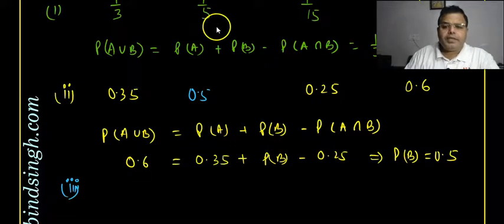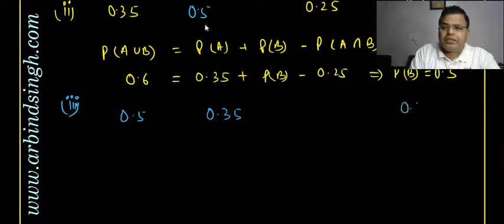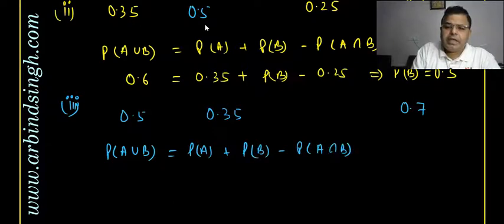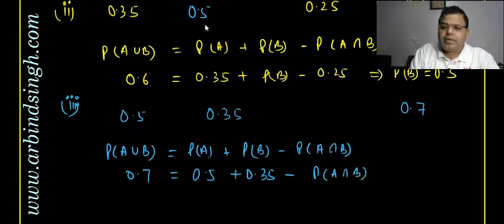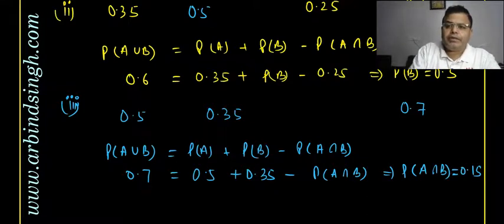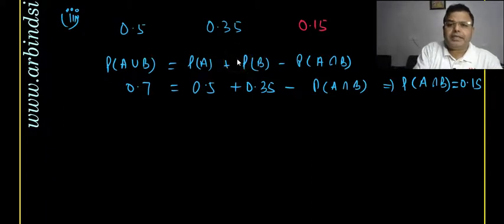The third part gives P(A) = 0.5, P(B) = 0.35, and P(A ∪ B) = 0.7. We need to find P(A ∩ B). Using the formula: 0.7 = 0.5 + 0.35 − P(A ∩ B), so P(A ∩ B) = 0.85 − 0.7 = 0.15. The answer is 0.15.